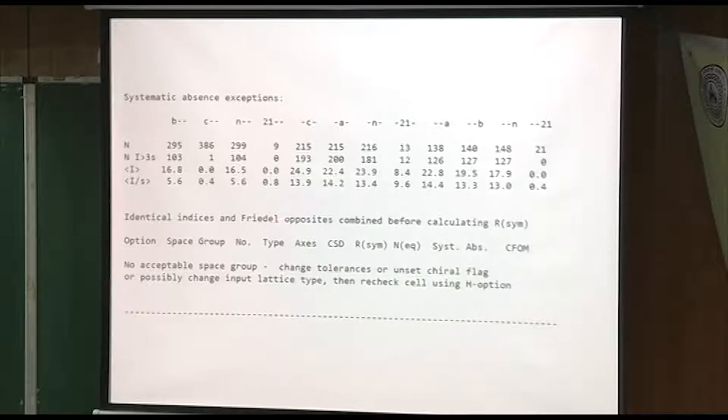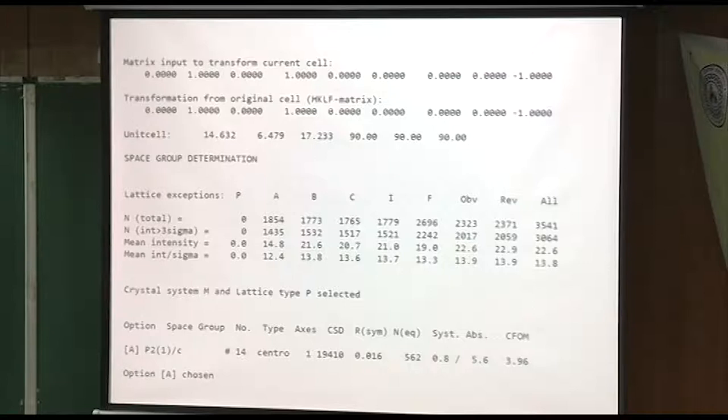You apply a matrix to transform it. It's a very simple matrix in this case. This is a 3x3 matrix, but it's written out as 9 characters. So it's 0, 1, 0, 1, 0, 0, and then 0, 0, minus 1. Usually if you switch two axes, you have to change one sign to preserve the right-handed coordinate system.